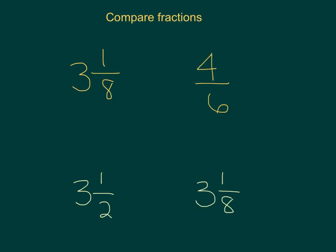Pause the video to compare the two fractions. For the first example, you should be able to look and see that 3 and 1 eighth is 3 wholes plus 1 eighth of something, whereas 4 sixths is just part of one whole. So you know that 3 is more than 1, so your greater than sign should go toward the one with the greater whole numbers.